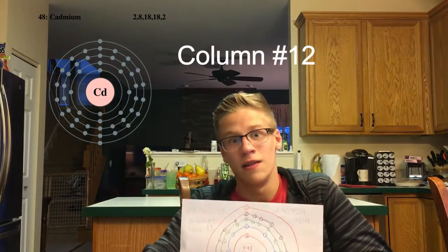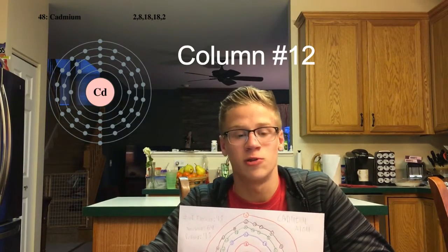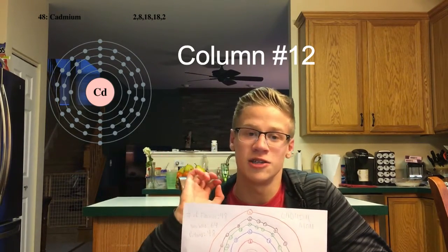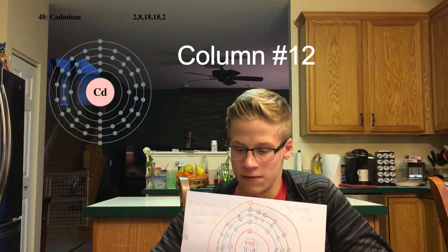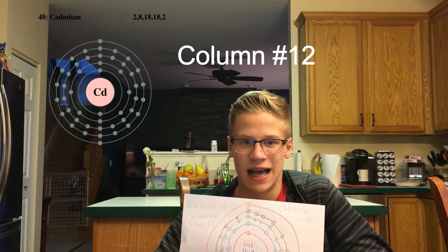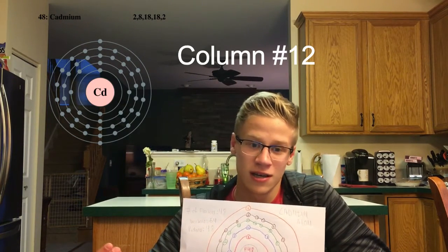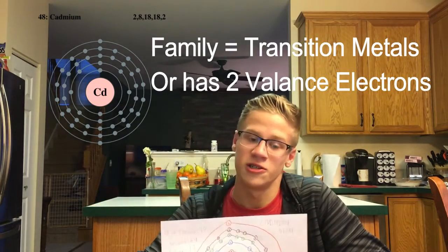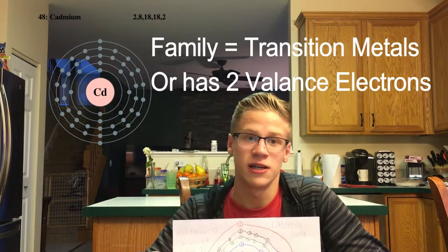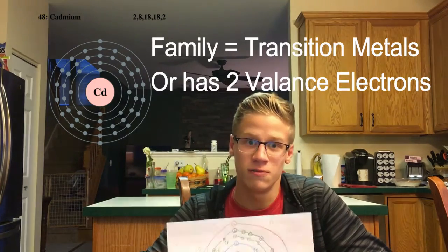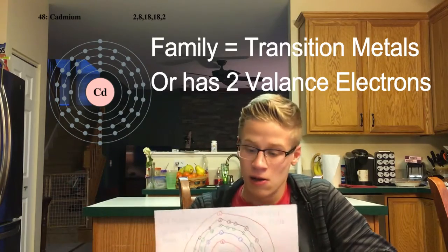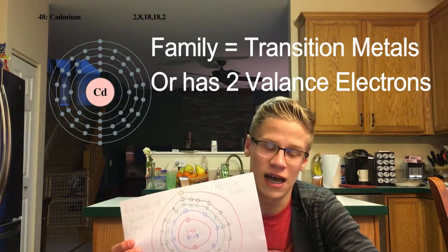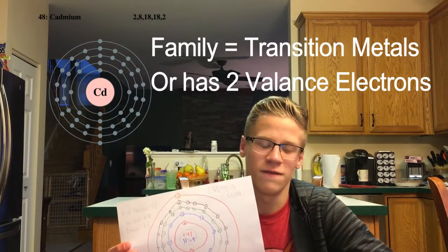On the periodic table, cadmium is in column number 12, which is arranged based on what chemical and physical properties it has in common with other elements. Its family is known as the transition metals, which have two valence electrons. The valence electrons are the two on the outside that help define the family.